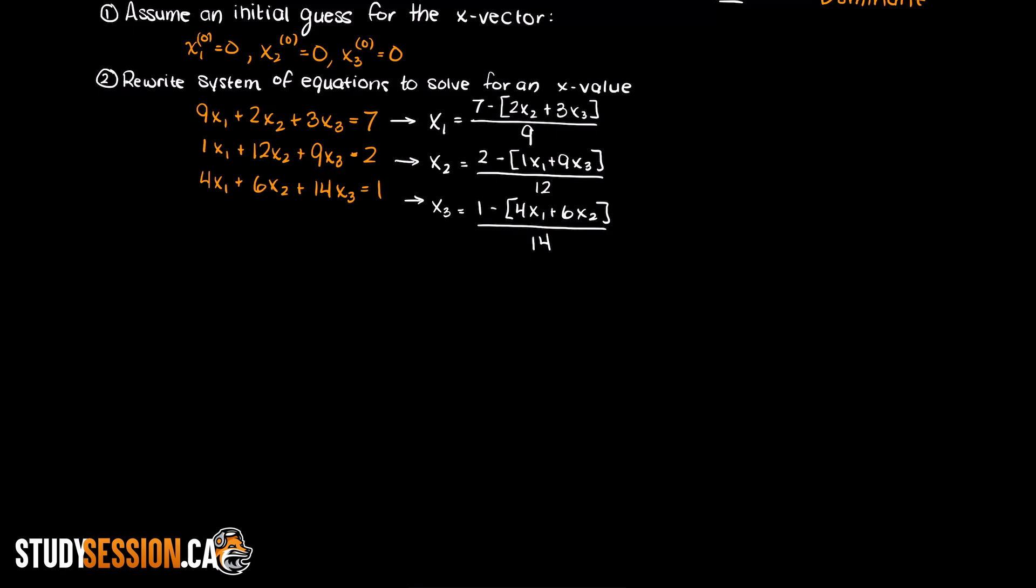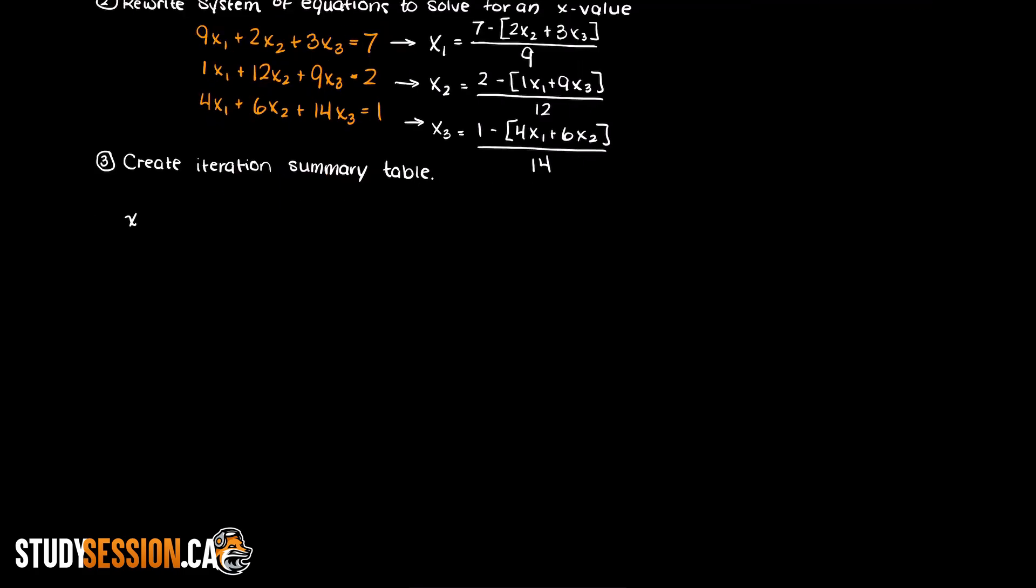Now let's create a simple table where we can keep track of all of our x values at every iteration. Now we are ready to begin solving for iteration one. Just as a side note you could call this iteration zero as well, it is really up to you. If you are using MATLAB for example you would typically call your initial guess iteration one as MATLAB does not use zero indexing. That is all counting begins at one. Whereas in say Python all counting begins at zero.